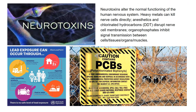Neurotoxins are another category of environmental toxins that affect normal functioning of human and other organisms' nervous systems. Heavy metals like lead can kill nerve cells directly. DDT is something that can disrupt nerve cell membranes. Organophosphates inhibit signal transmission between cells, tissues, organs, and muscles. PCBs are one of those as well.